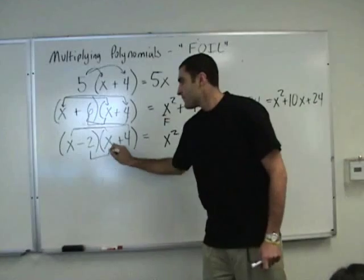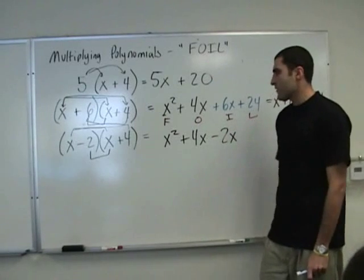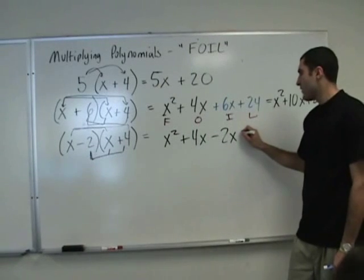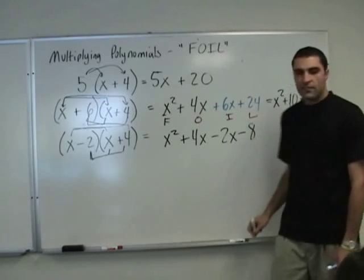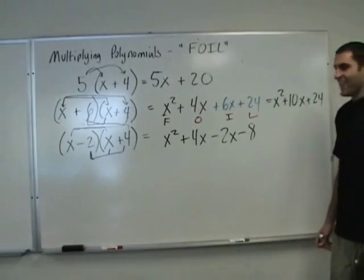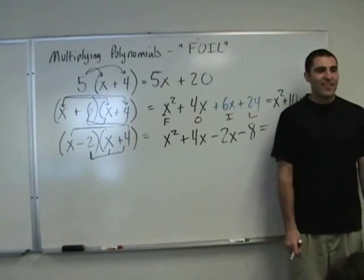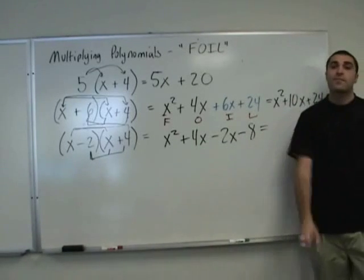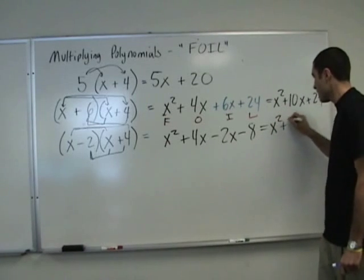Inner: negative 2 and x — that's negative 2x. And then the Last: negative 2 and 4 — multiply them and that's negative 8, so minus 8. Don't be afraid to speak up, you're right, be proud. Good job. So the last step is to simplify the middle two terms: x squared plus 2x minus 8.